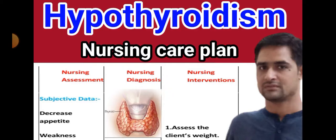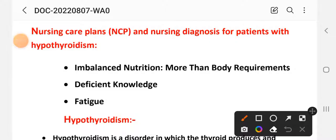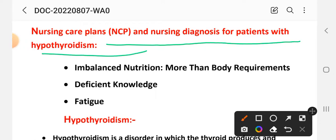This covers different nursing process steps: nursing assessment, diagnosis, goal, intervention, rational, and evaluation care plan on hypothyroidism disease. The nursing diagnoses for patients with hypothyroidism include: first, imbalanced nutrition more than body requirement; second, deficient knowledge; and third, fatigue. These are the three important nursing care plans which we will prepare for this disorder.